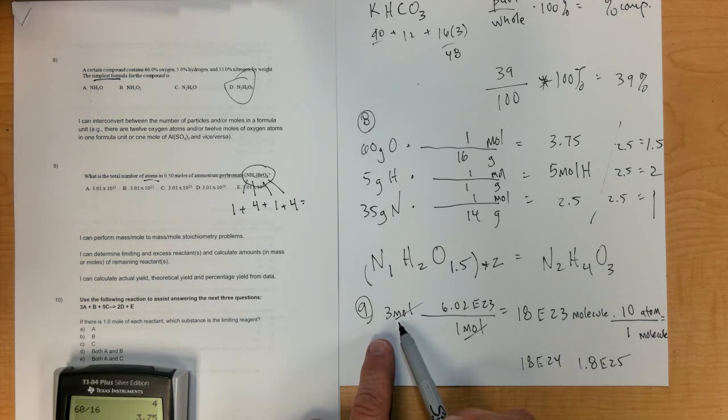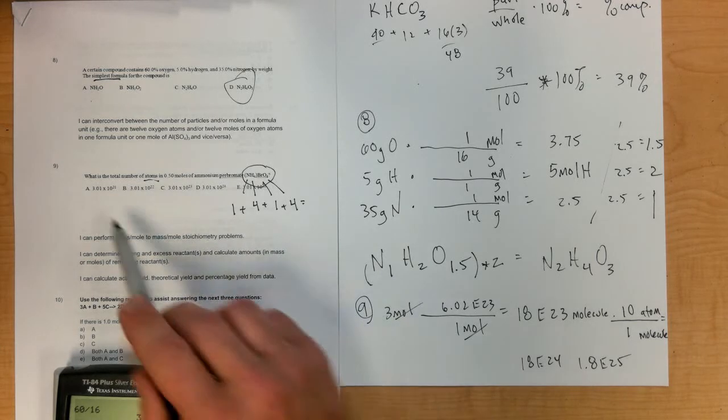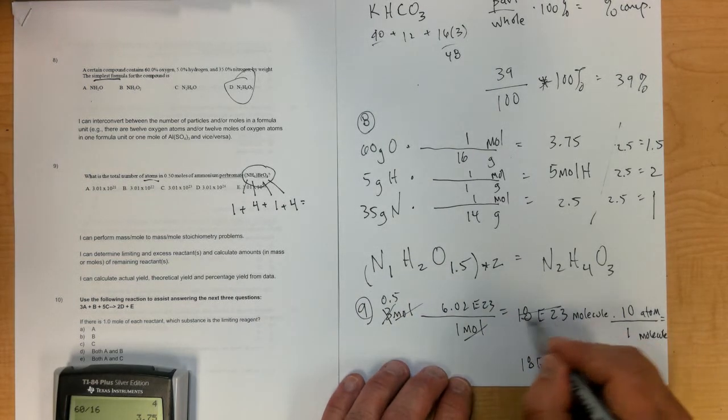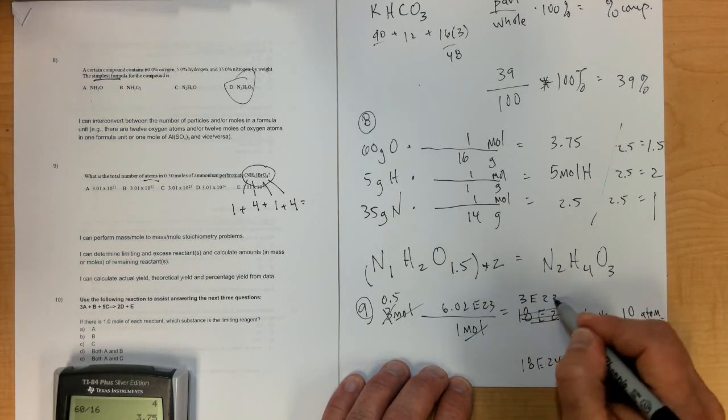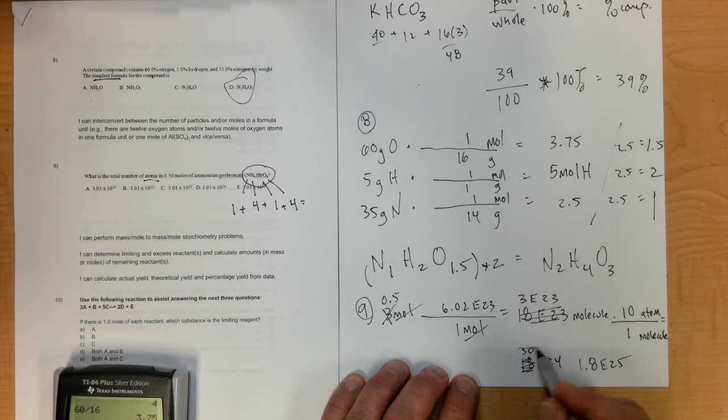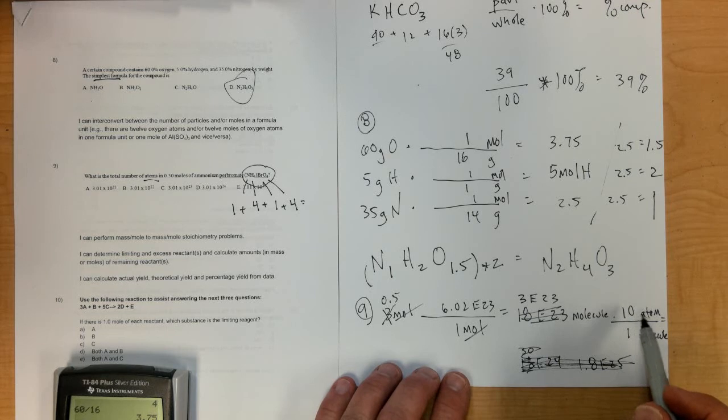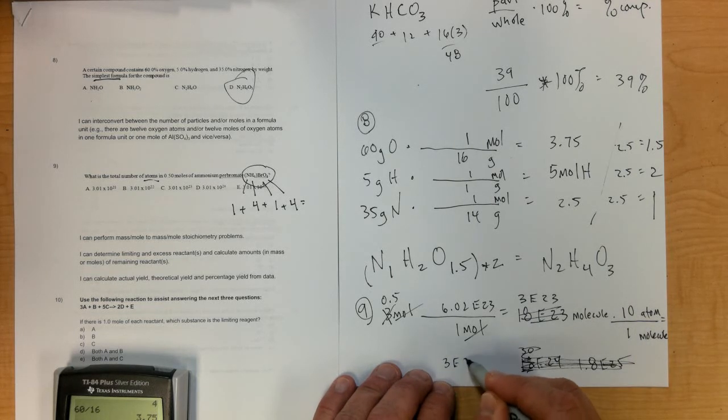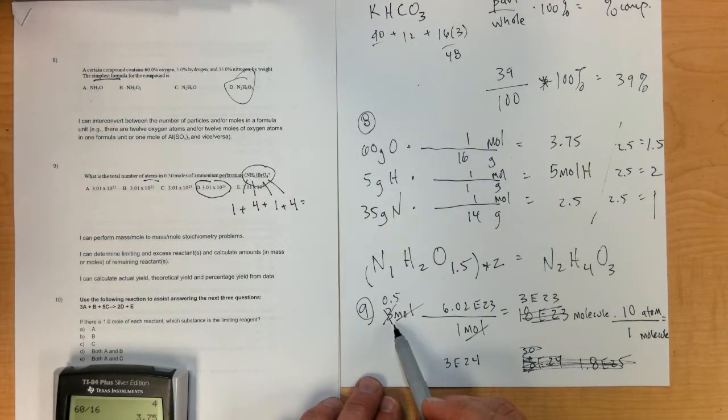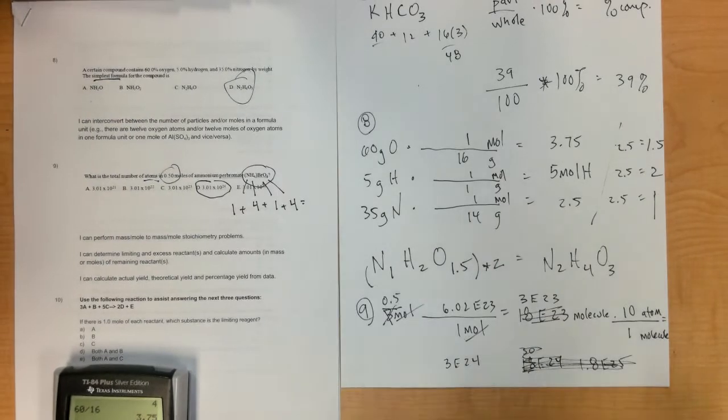Oh, I'm not sure why I started with 3. It says 0.5 moles right here. Let's go back and fix that. 0.5 times 6.02 times 10^23 would be 3 times 10^23. Now times 10 would be 3 times 10^24. That would be letter D. My apologies, I have no idea where that 3 came from. It says 0.5 moles, so you should have started with 0.5 moles.